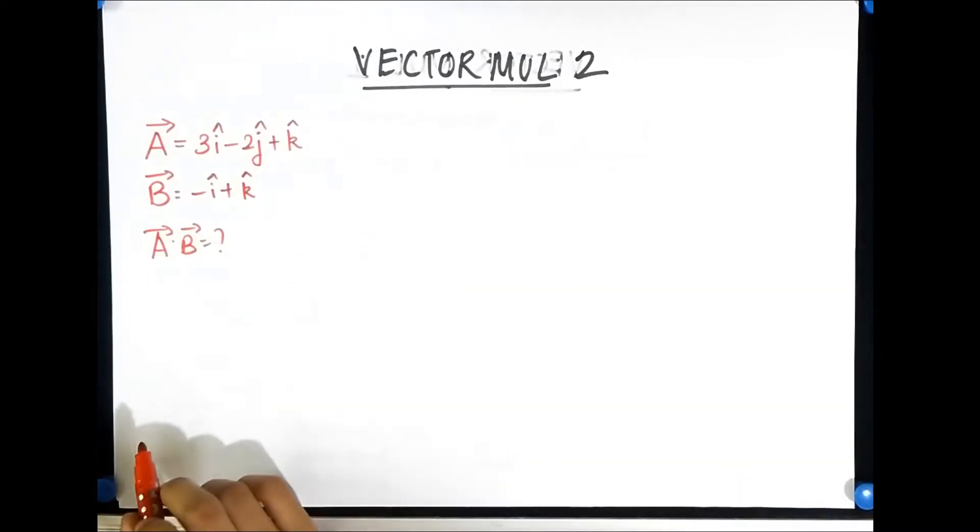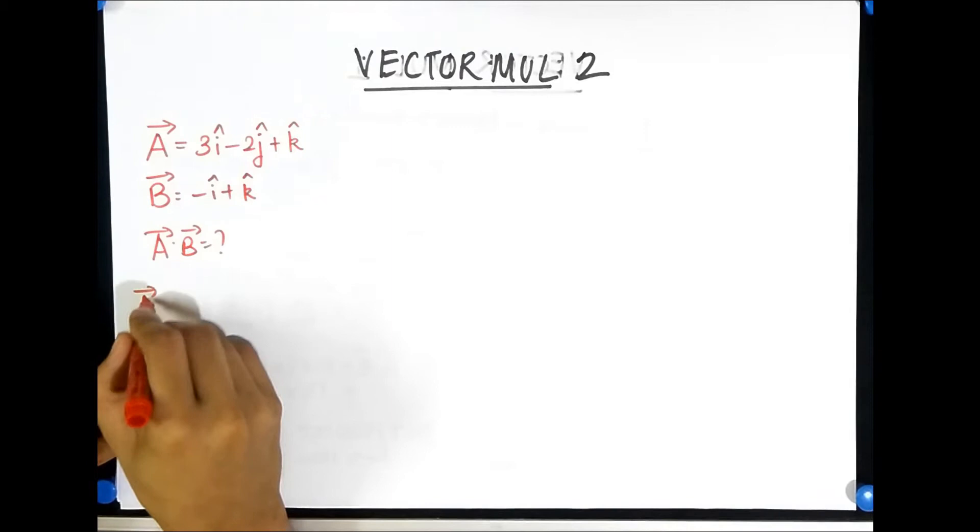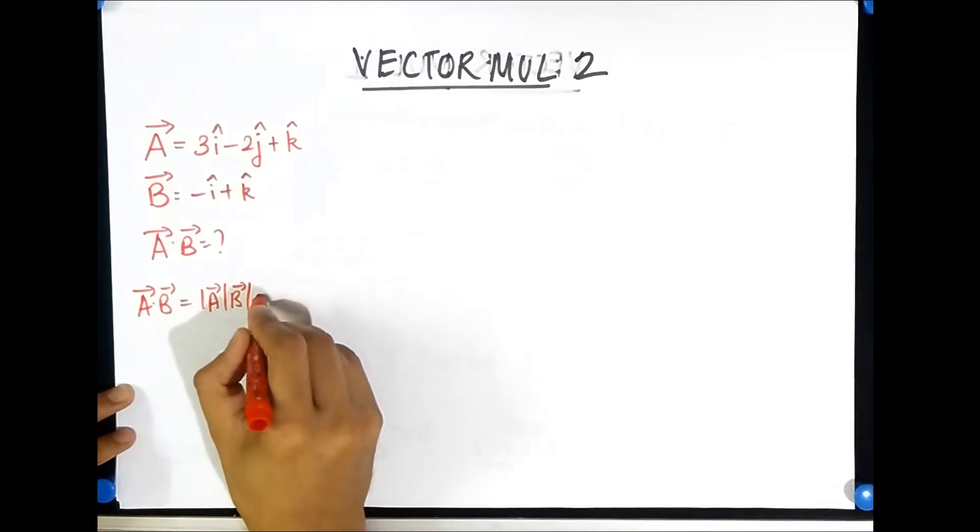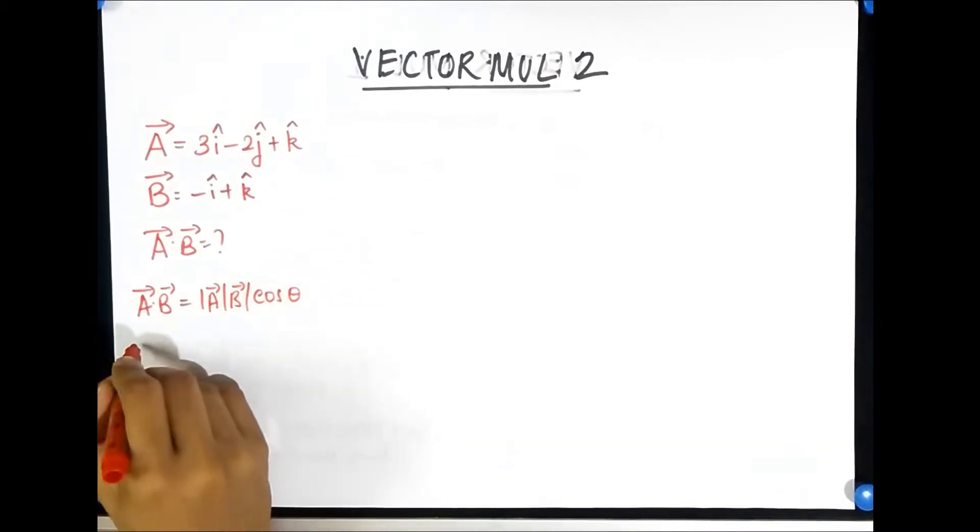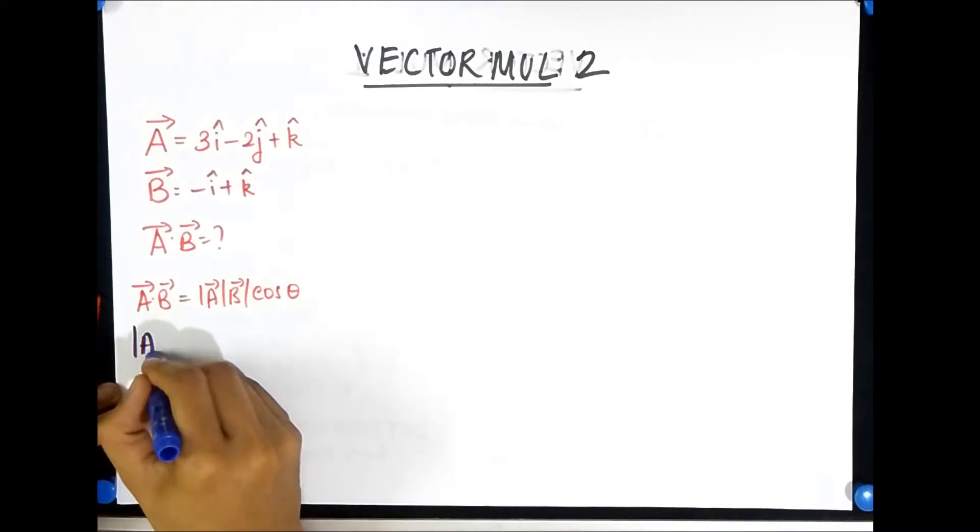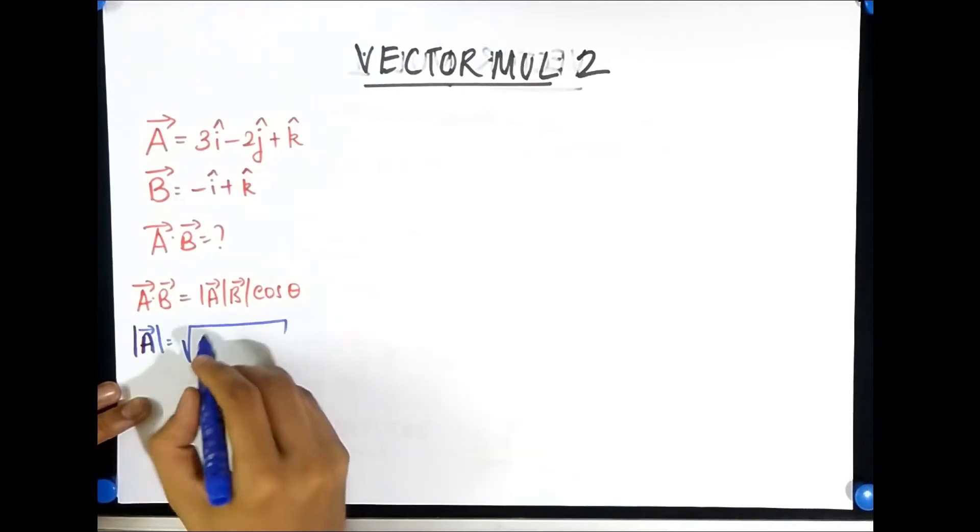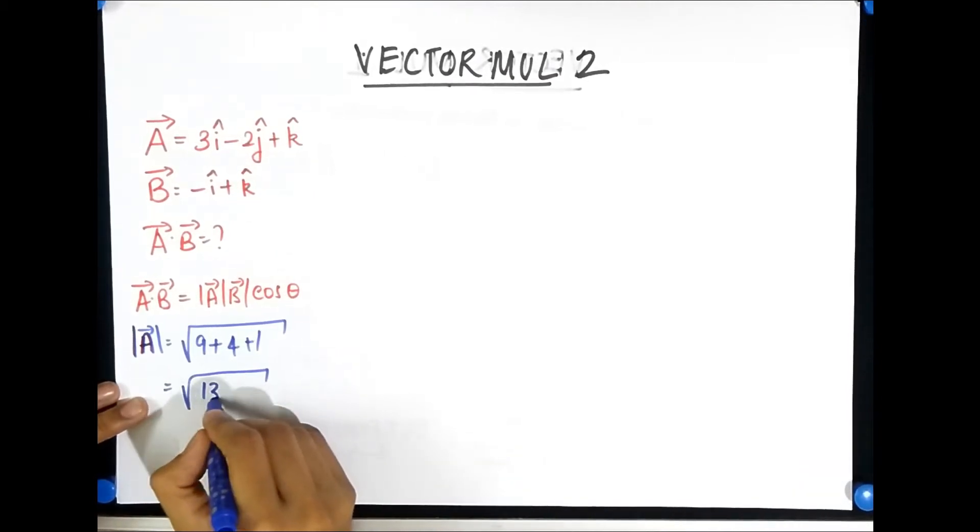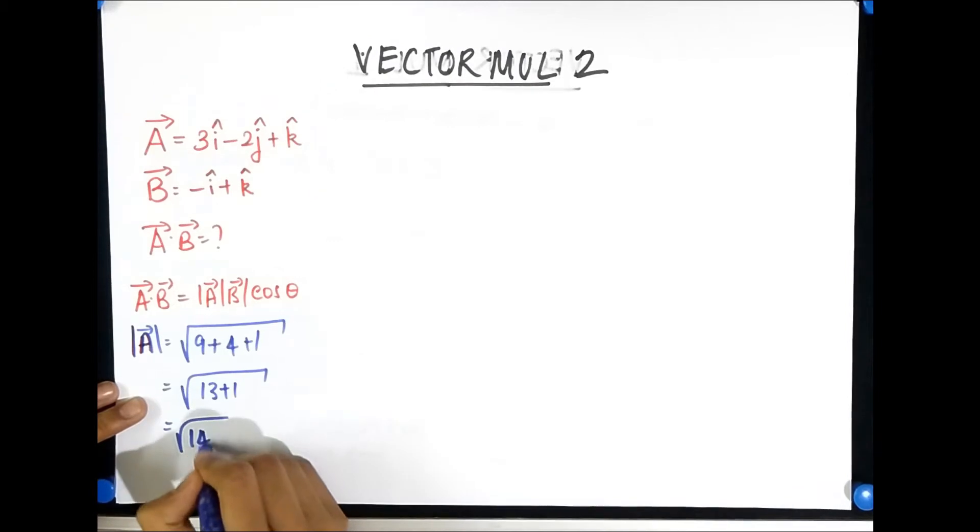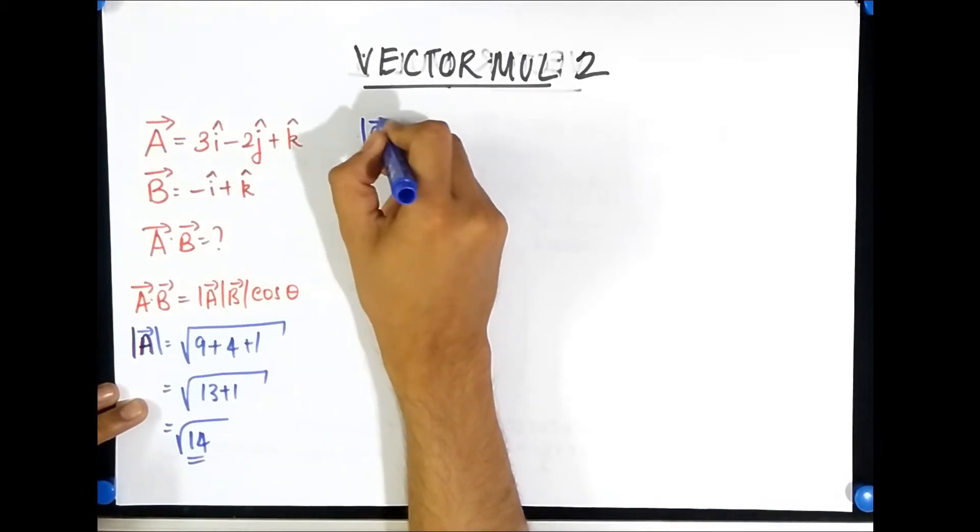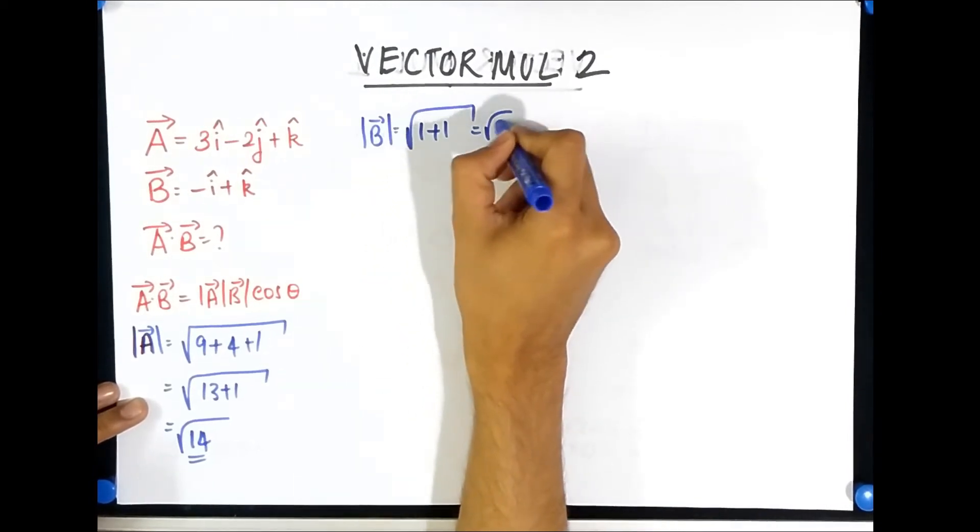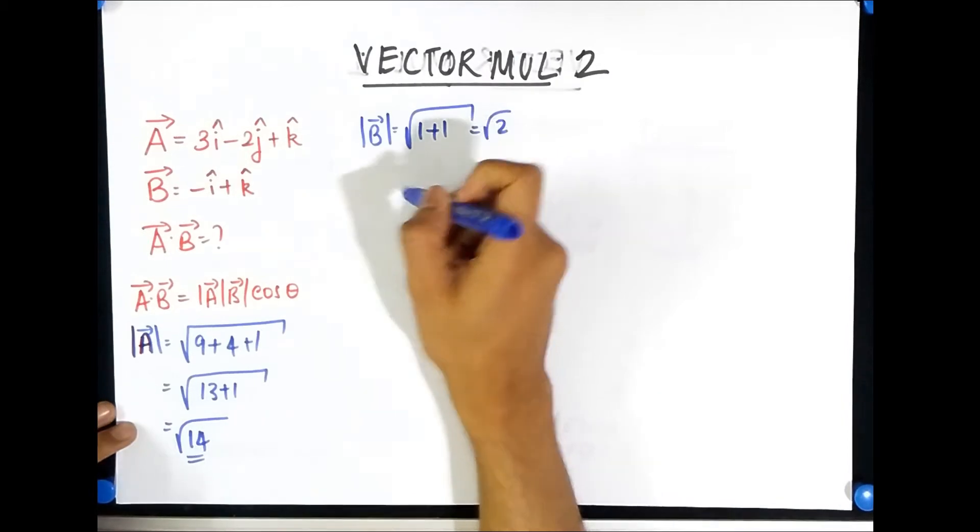How to calculate this? Well, you may be inclined to say A dot B is magnitude of A times magnitude of B times cos of the angle between them. Wait let me use blue for this. Then you could say magnitude of A is easy, it's just the extended version of Pythagoras, 9 plus 4 plus 1, that is the square root of 14, and the magnitude of B is also the Pythagoras extension, so it's just 1 plus 1 that is root 2.